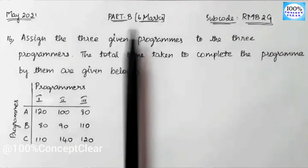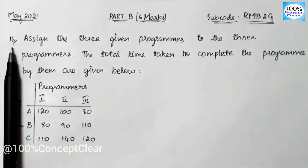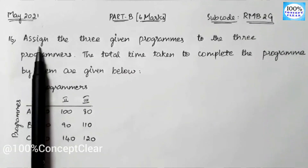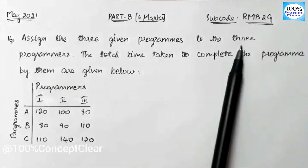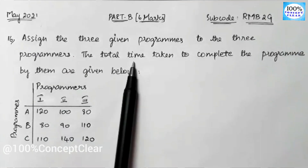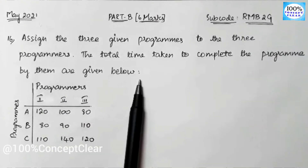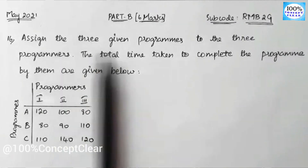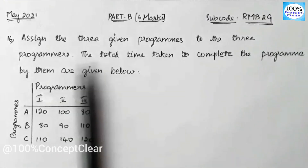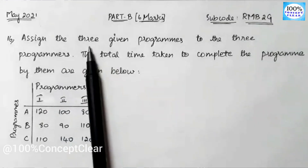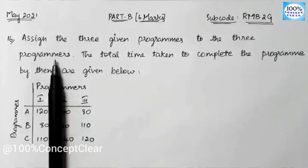In this video, we will be able to solve Part B, or 6 marks. We will be able to solve the question of Part B. The problem is: Assign the 3 given programs to the 3 programmers. The total time taken to complete the program by them are given below. So we have 3 programmers and there are 3 programs. We will assign the 3 programs — this is the assignment problem.